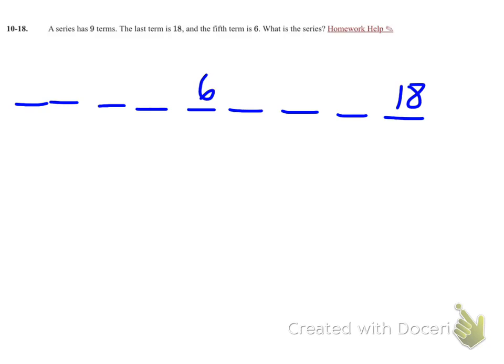That means that in this space here, from 6 to 18, it's going up by 12 by adding the same number 1, 2, 3, 4 times.